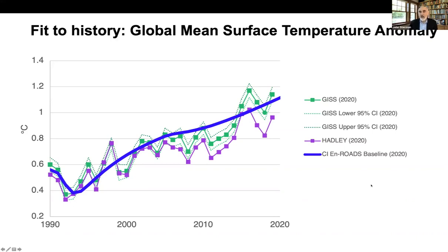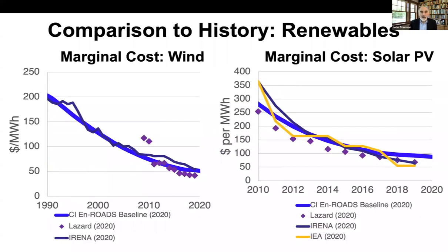We also look at how well the model captures the energy system dynamics, including the costs of rapidly changing renewable energy technologies like wind and photovoltaics. Here you see the marginal cost of wind power, measured in dollars per megawatt hour, which has declined dramatically in the historical data since 1990 — now down under $50 per megawatt hour. On the right, you see the same curve for the marginal cost of solar photovoltaics from 2010 onward, showing a dramatic decline in the costs of solar power.